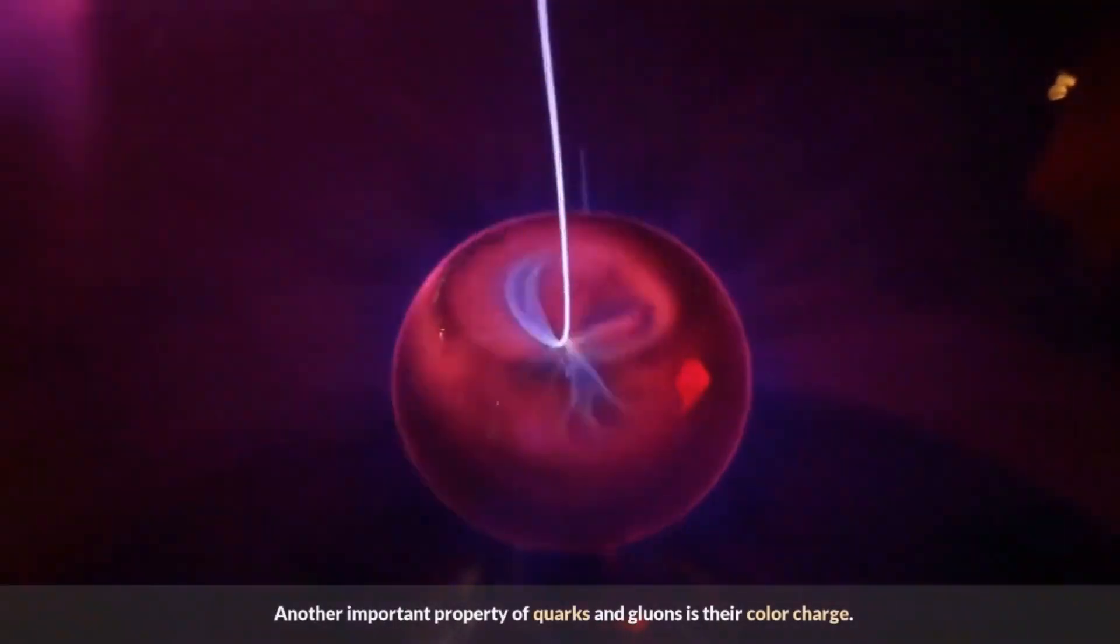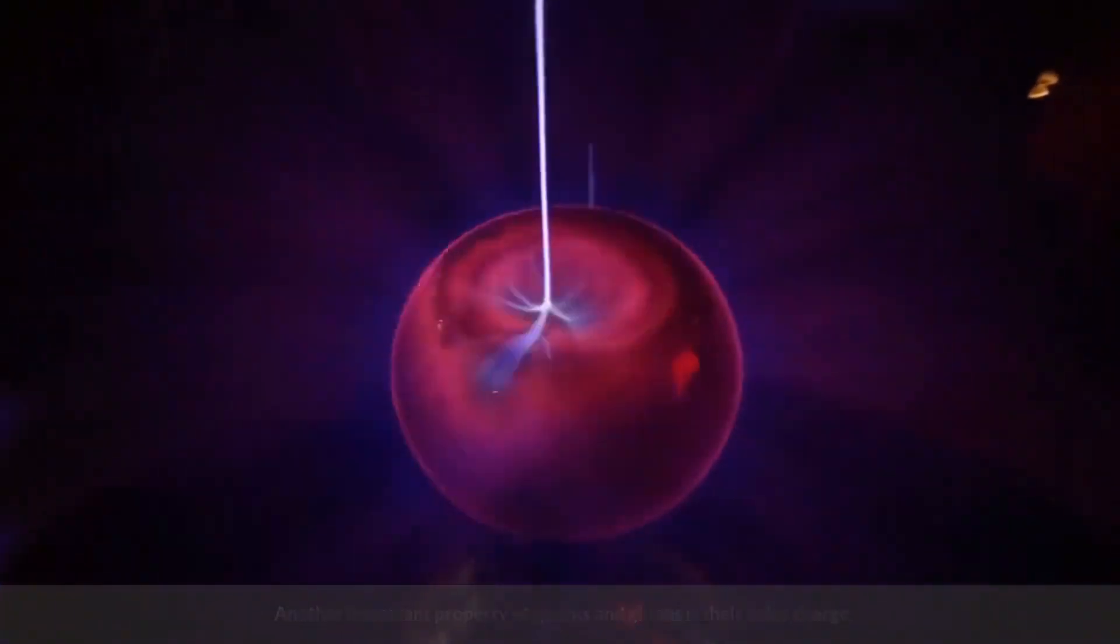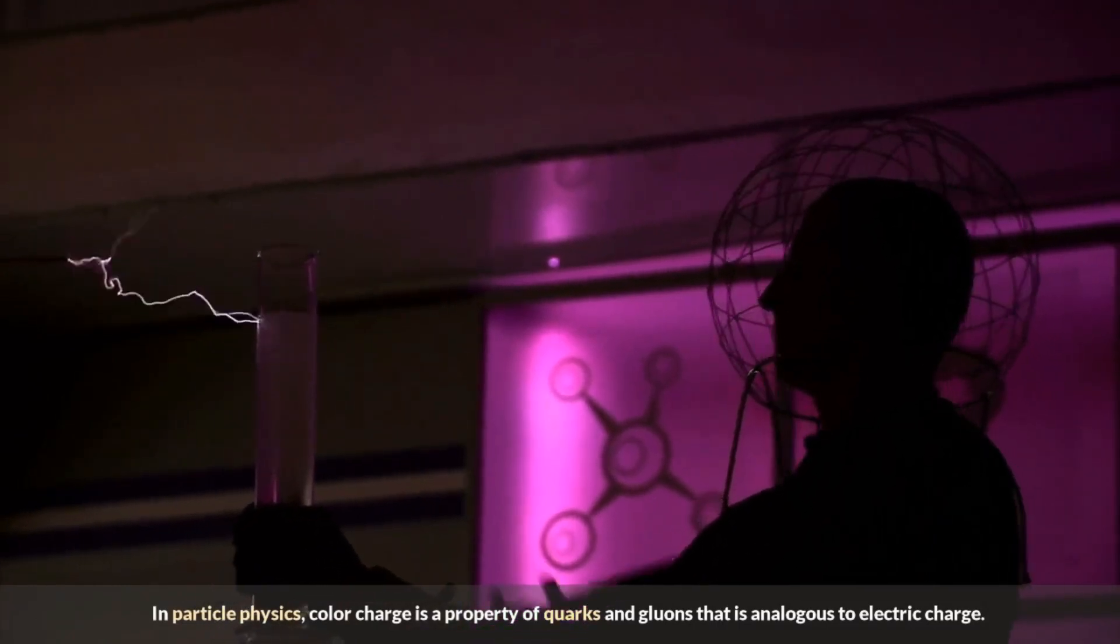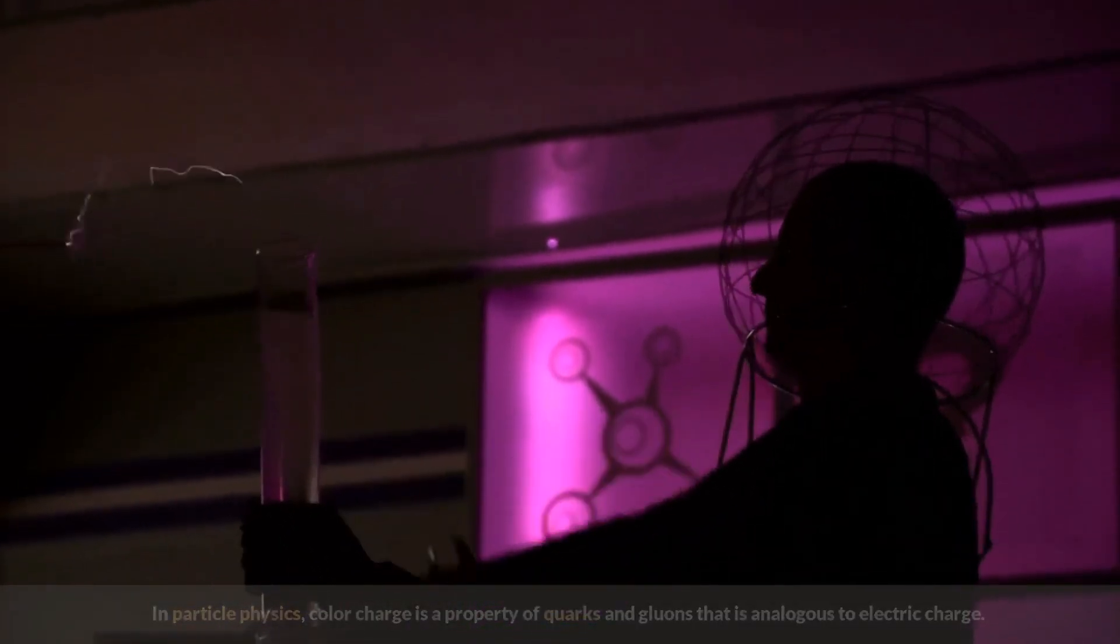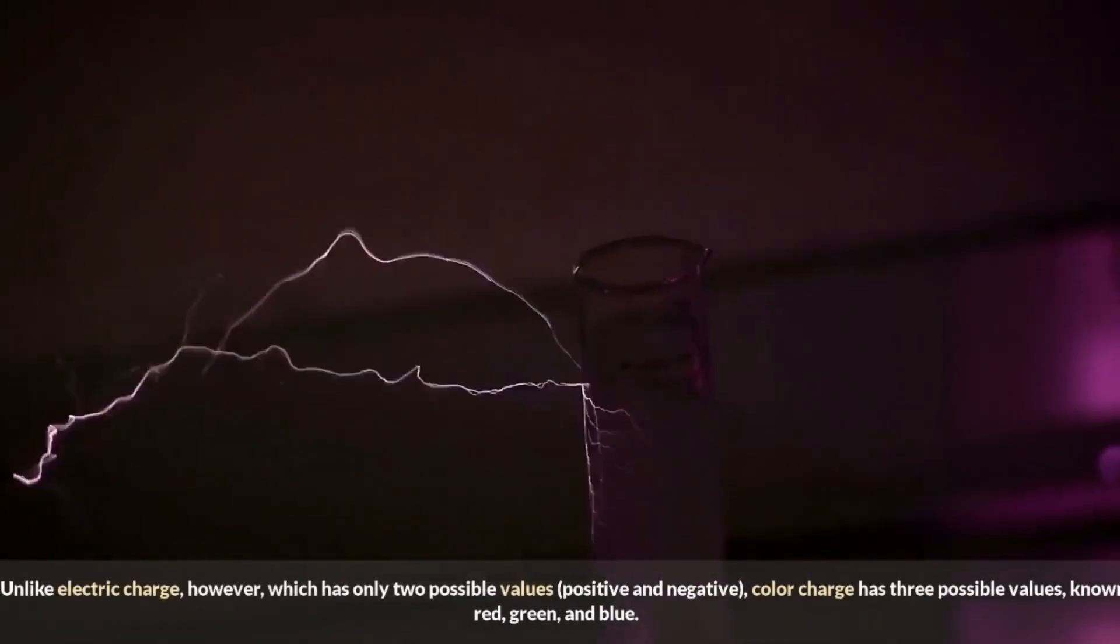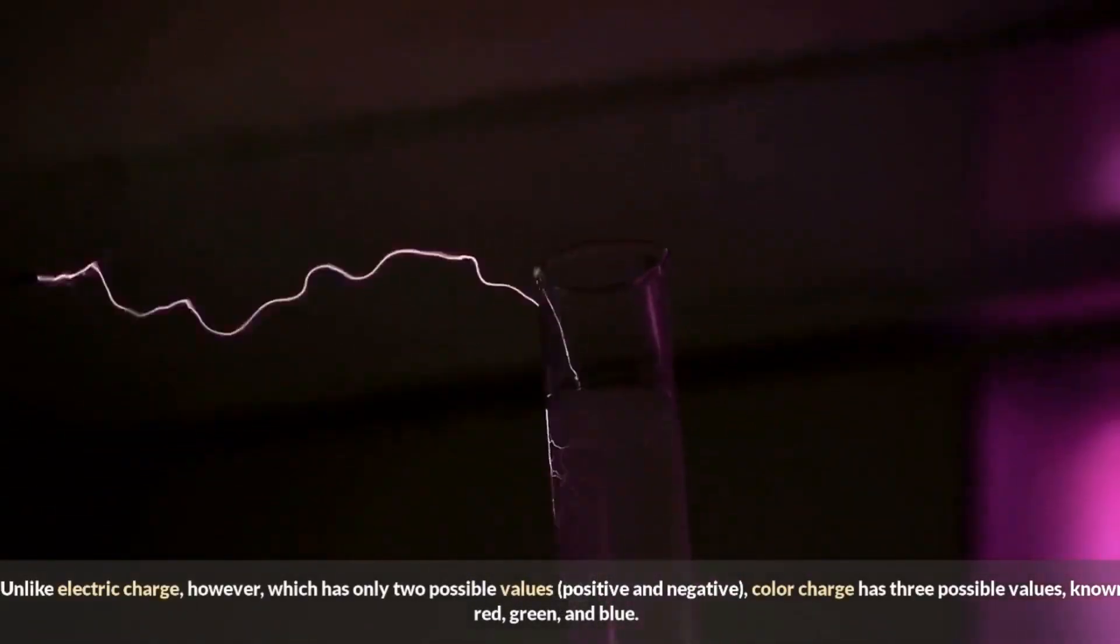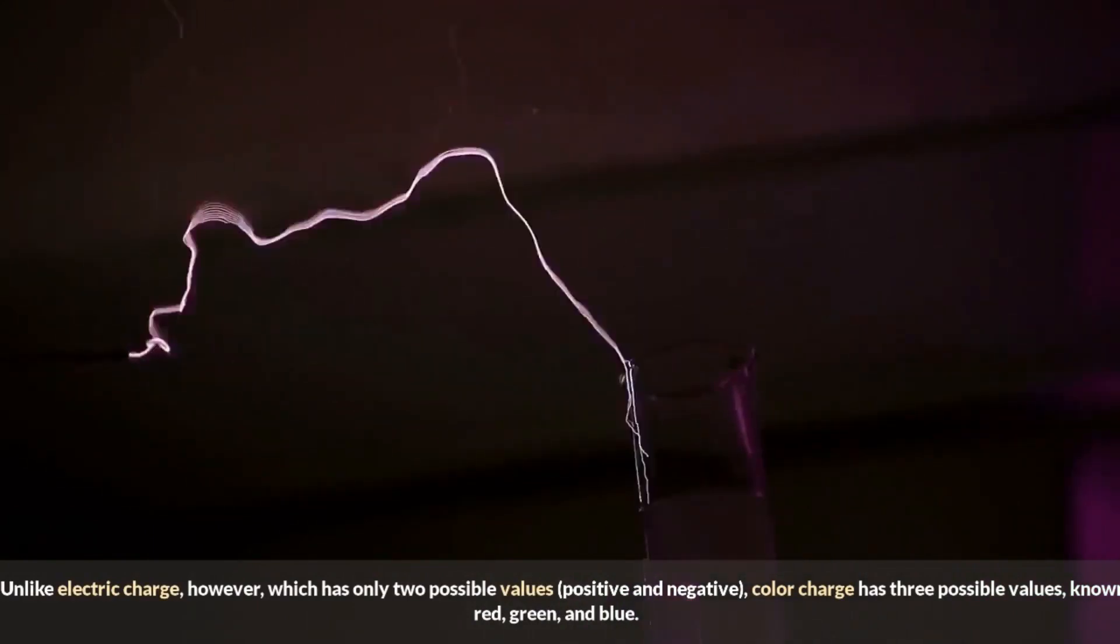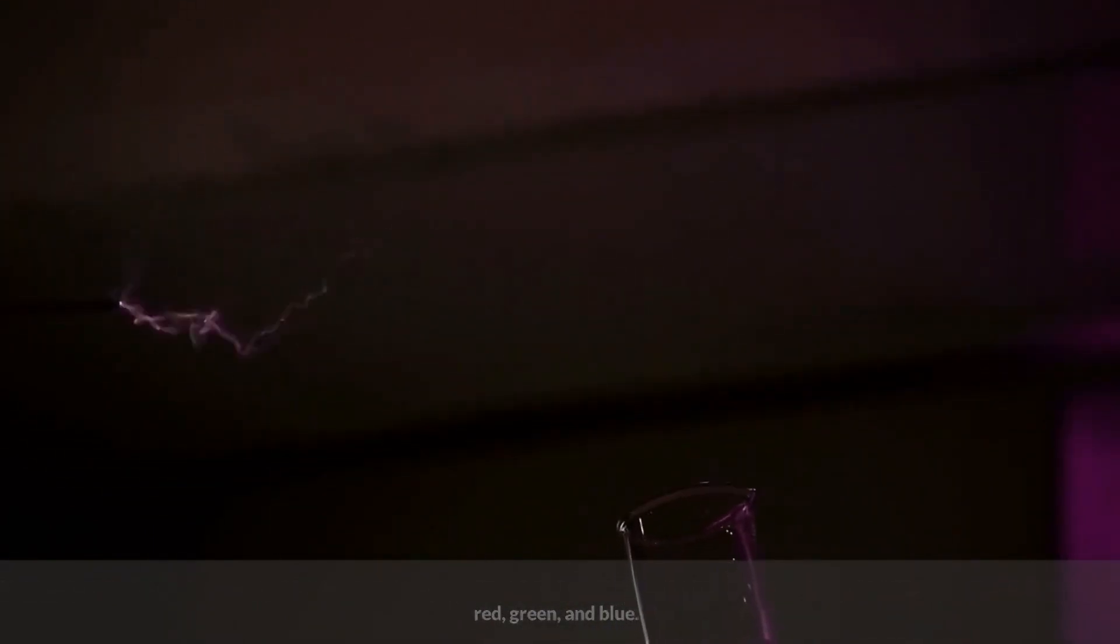Another important property of quarks and gluons is their color charge. In particle physics, color charge is a property of quarks and gluons that is analogous to electric charge. Unlike electric charge, however, which has only two possible values, positive and negative, color charge has three possible values, known as red, green, and blue.